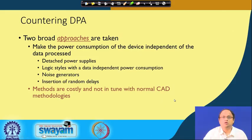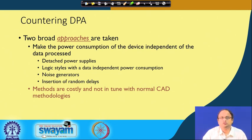To start with, how we can counter DPA. Differential power attacks fundamentally work by exploiting the fact that power consumption depends upon the underlying data. There could be several strategies, broadly classified into two approaches. The first approach, which is essentially very popular, is by trying ad hoc design techniques with the objective of making the power consumption of the device independent of the underlying data.